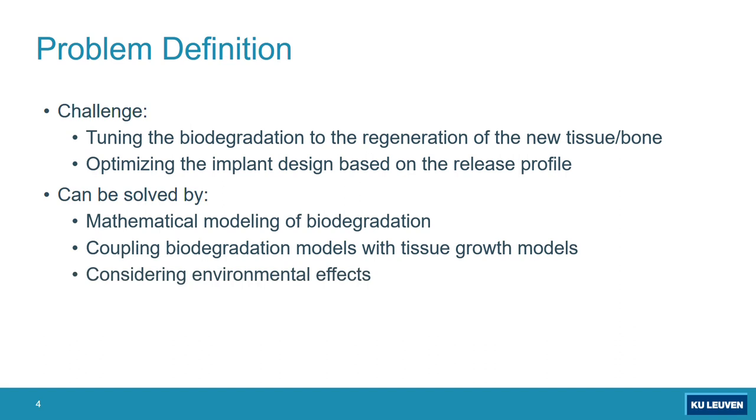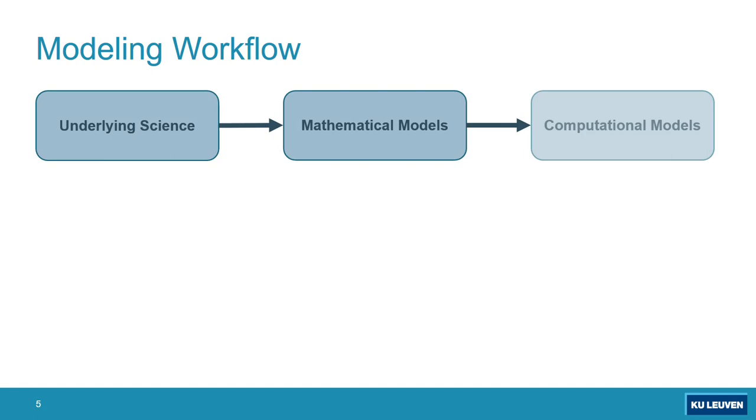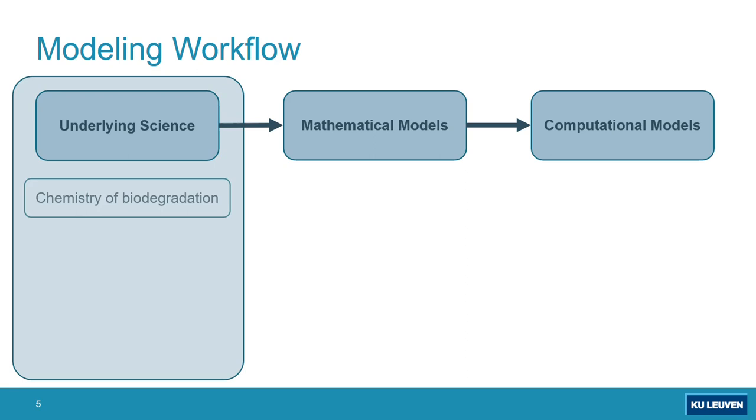This is a typical approach for most projects where the underlying phenomena are converted to mathematical models and then these mathematical models to computational models. In this project, the phenomena are the chemistry of biodegradation in the first place, then the physics of perfusion fluid flow if you want to have hydrodynamic conditions in experiments, and then biology of tissue growth.